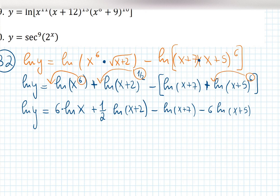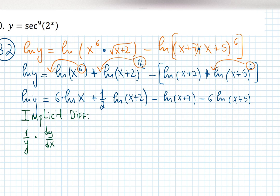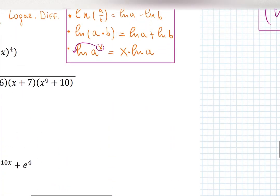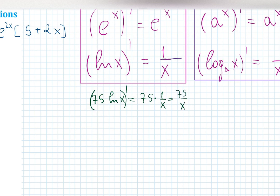That was just simplification — we used logarithmic differentiation but have not differentiated yet. Now we differentiate, starting the implicit differentiation process. Step one: differentiate both sides. The derivative of ln(y) gives 1 over y times dy/dx on the left. On the right: 6·ln(x) becomes 6 over x — because the derivative of ln(x) is 1 over x, so any constant times ln(x) just gives that constant over x.